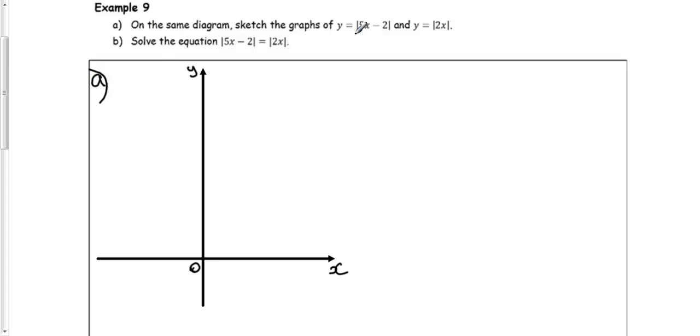So first of all, modulus of 5x take 2. If the mod signs weren't there, we'd have a straight line graph with a gradient of 5 going through the y-axis at minus 2. So that would look approximately like that. So this gives me an idea of what the mod graph is going to look like.